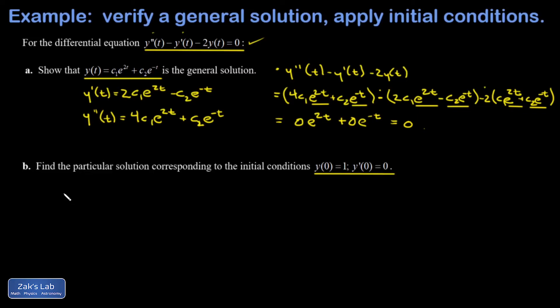In part B, I'm asked for the particular solution corresponding to these initial conditions. So I'll start with y(0) = 1. So if I take my original function y and I plug in 0 for t, I'm supposed to get 1. So I have 1 is equal to c₁ because e^0 is 1, plus c₂.